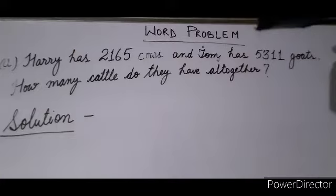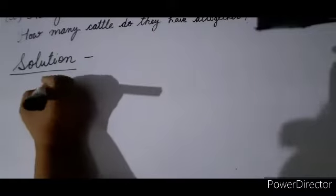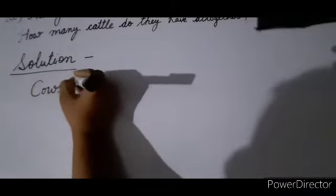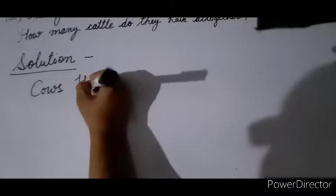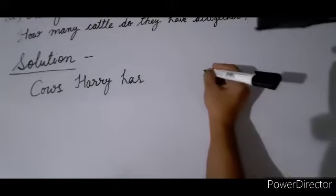In the solution, you have to write statements also. We will explain how to write them. After writing 'Solution', first line: write 'Cow's' — Harry has — because Harry is a name, write with a capital letter. Write 'Harry has', then give some space and put the equal sign.